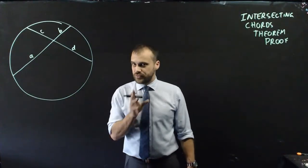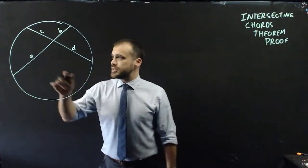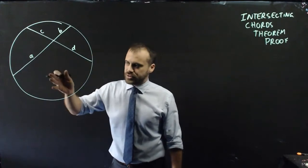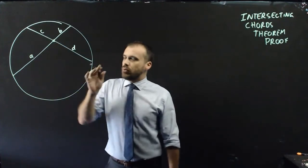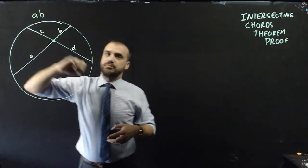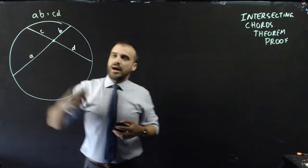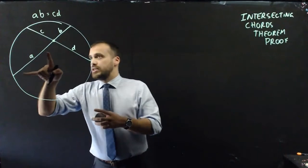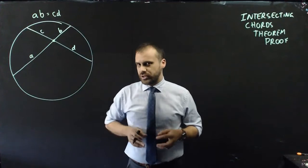This is going to feel different to the other proofs you've done. It's called the Intersecting Chords Theorem, and what it says is that if you draw two chords through a circle — chords don't have to pass through the centre, but they do intersect — then this length times this length, A times B, will be equal to C times D. That's what we're trying to prove. Really cool, and it relies on similar triangles.